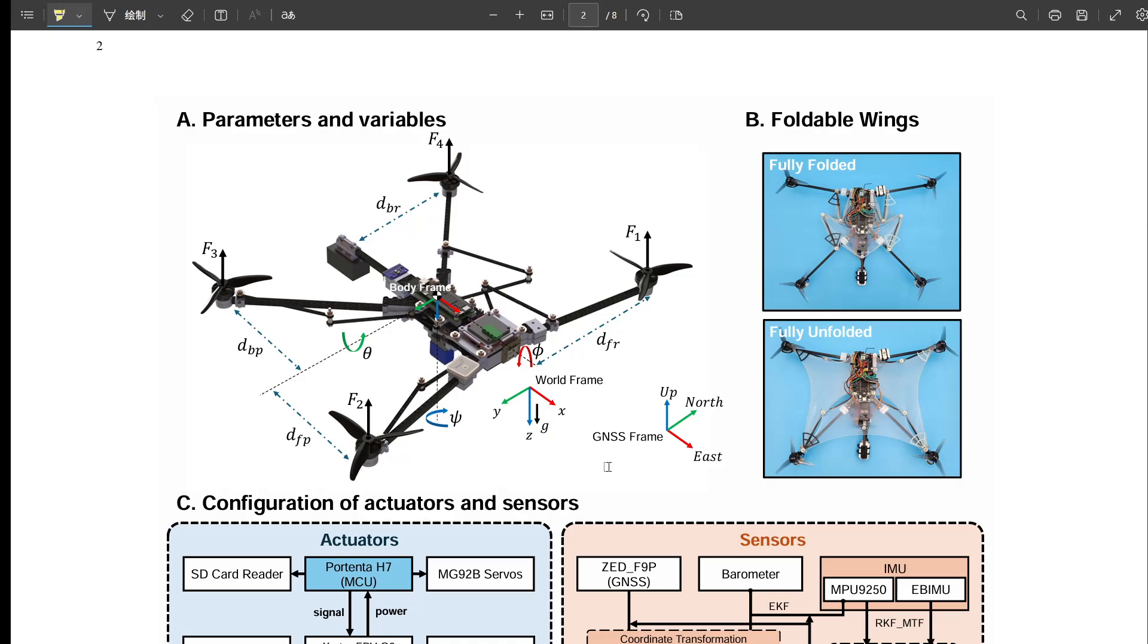It's all about the patagium. That's the stretchy skin membrane between its wrists and ankles. When it jumps, it stretches that out, massively increasing its surface area. It lets it glide, obviously. But crucially, it can tweak the shape and tension to control its path midair. It's quite subtle control.